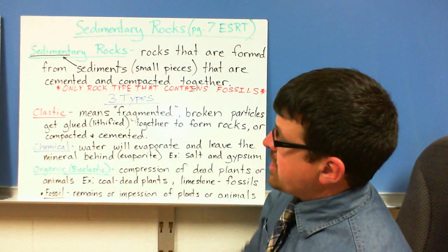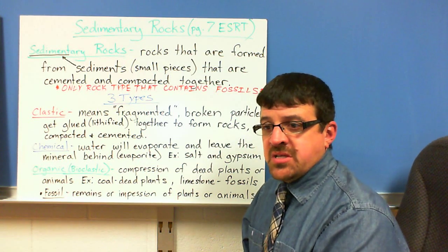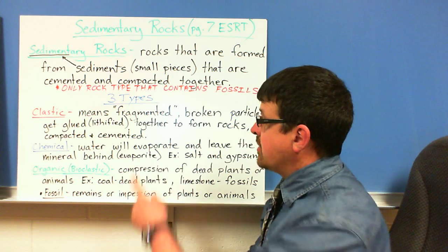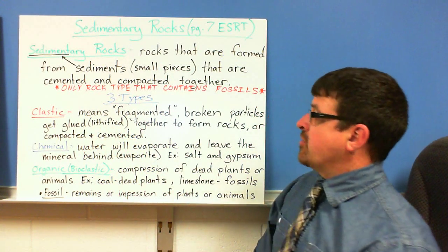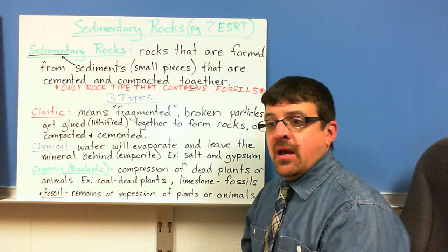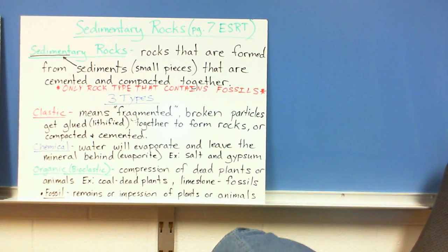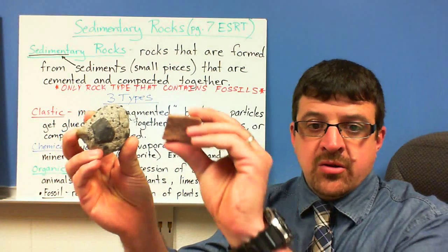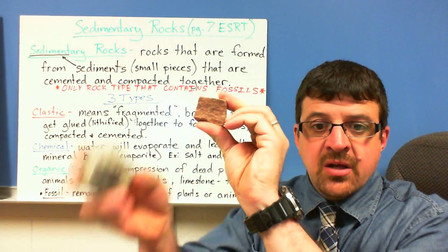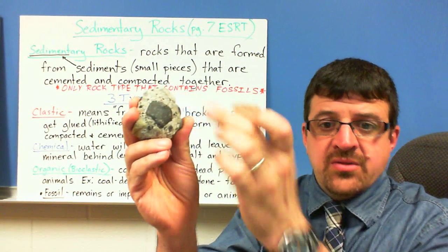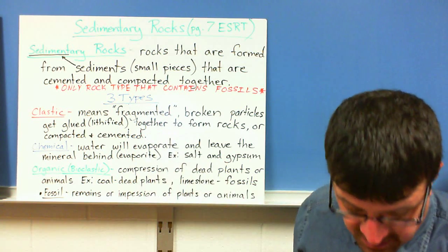There are three types of sedimentary rocks. Clastic rocks are pieces of rocks, sand, and other material cemented together — broken particles that get lithified to form rocks; they're compacted and cemented. Examples include conglomerate and sandstone. Sandstone is just sand grains cemented together; conglomerate has bigger rock pieces along with sand grains, all cemented together.